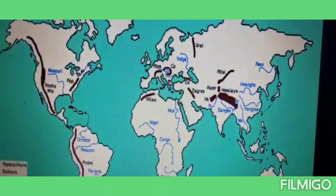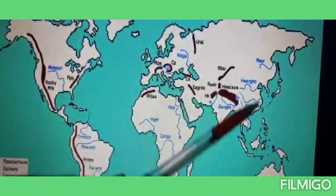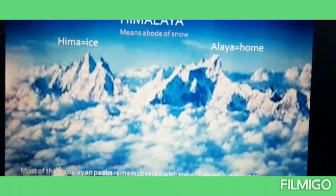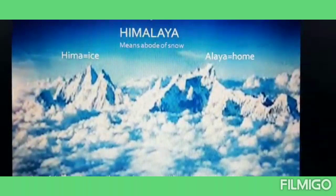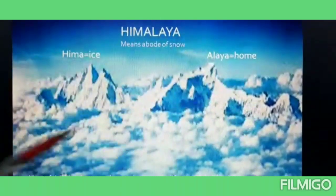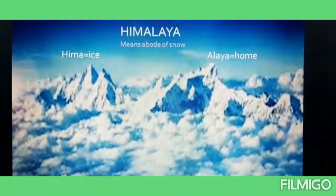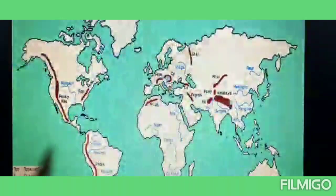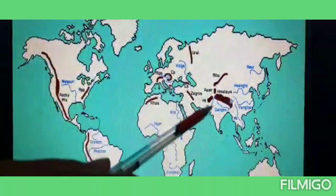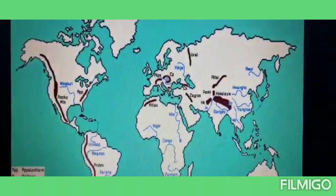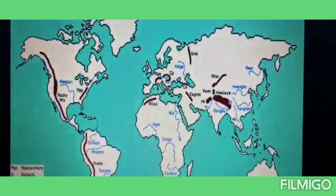Which mountain range is that? It is the Himalaya. The Northern Mountains include the Himalayas and the Karakoram mountain ranges. The Himalayan range is the highest mountain range in the world.